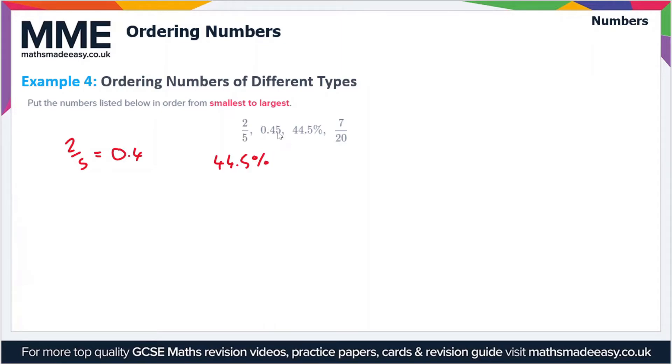And 7/20, if you're not sure how to divide by 20, divide by 10 then divide by 2 again. So 7/10 equals 0.7, and 0.7 divided by 2 equals 0.35. So 7/20 is equal to 0.35.